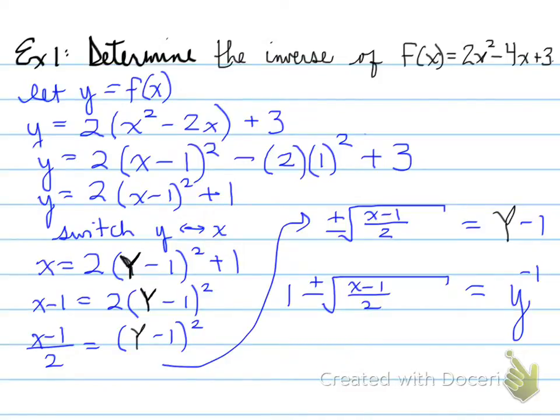Now, a lot of you are probably wondering, where did all of a sudden this inverse come from, the one that's over here? Well, folks, keep in mind that this inverse was actually this y, which is actually the one that we switched, and we switched it to find that inverse, which is f inverse of x. So, the final statement is f inverse of x is equal to 1 plus or minus the square root of x minus 1 over 2.